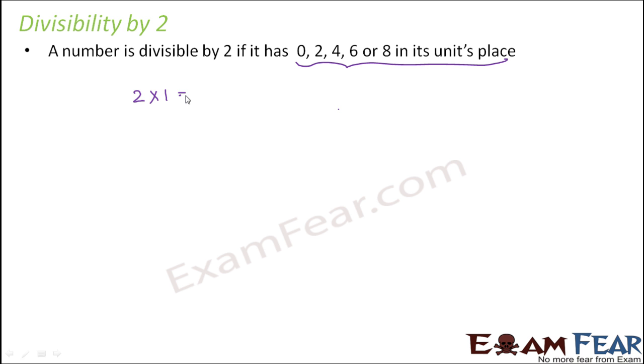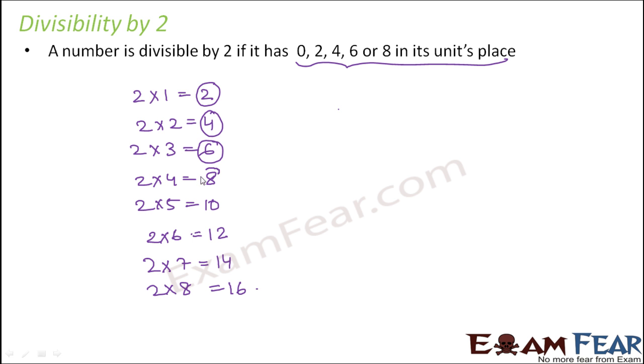Let us look at the multiples of 2. So when you look at the multiples of 2, this is how it is: 2 1s are 2, 2 2s are 4, 2 3s are 6, 2 4s are 8, 2 5s are 10, 2 6s are 12, 2 7s are 14, 2 8s are 16 and so on. So when you look at the multiples of 2, just observe the digit at the units place. And you would see that all these digits are either of these five digits, either 0 or 2 or 4 or 6 or 8. So that's how the pattern is.